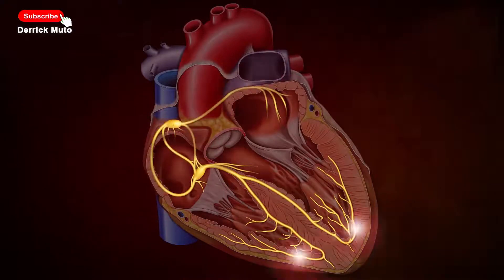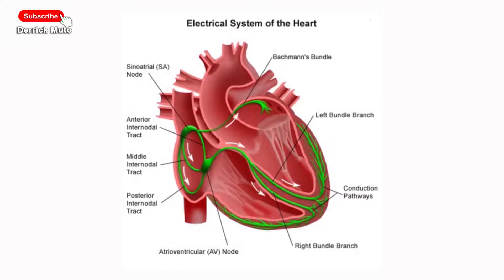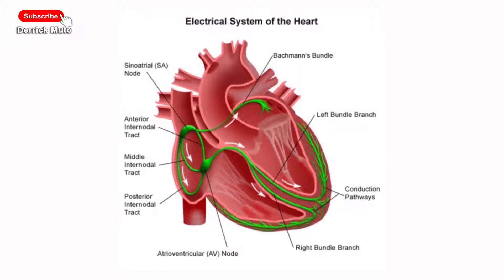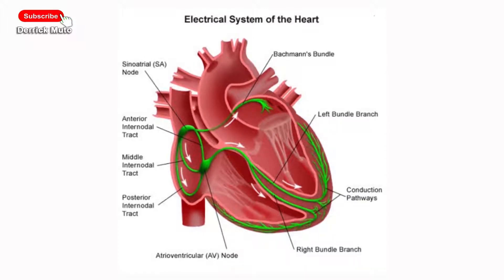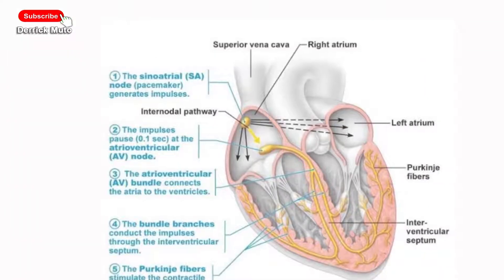The conducting system of the human heart has got basically five major components. One is the sinoatrial node, or node of Keith-Flack. Two, the atrioventricular node. Three, the atrioventricular bundle or bundle of His. Four, the right and left branches of the bundle of His. And lastly, the subendocardial Purkinje fibers, or basically Purkinje fibers.